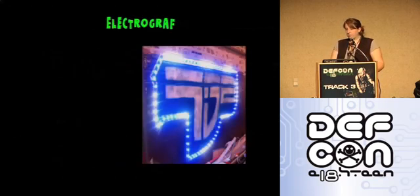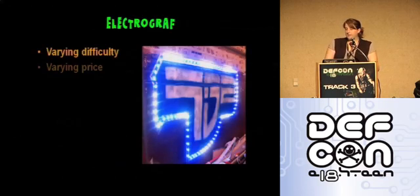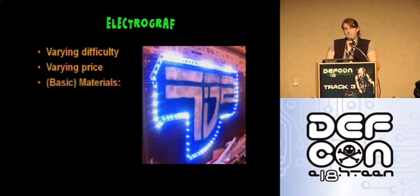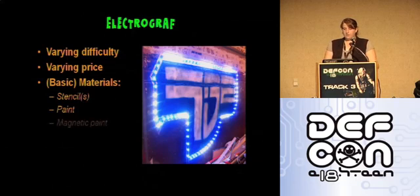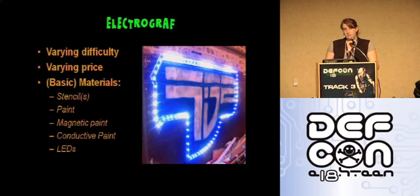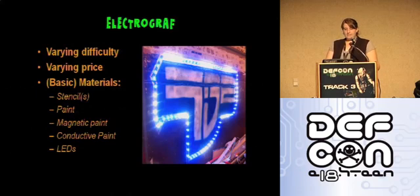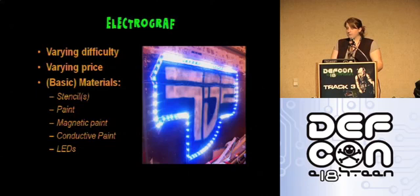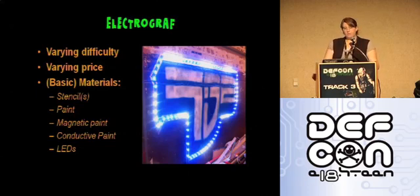Next we have the Electrograph. It can be as easy or as difficult — and as inexpensive or expensive — as you want to make it. The base materials are pretty simple: conductive paint, magnetic paint, regular and or spray paints, stencils in case you're not comfortable free-handing, LEDs, and batteries. From there you can add various components like microprocessors or photoresistors so that the LEDs only come on during night, or even a proximity sensor so that it lights up or does something based on how close someone is to the art.